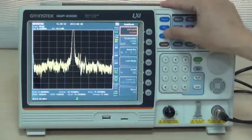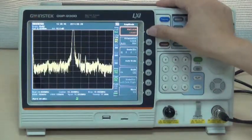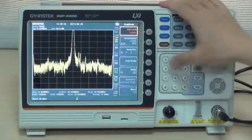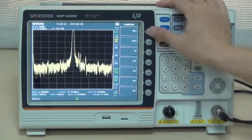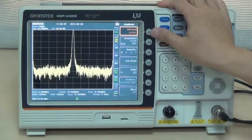Next, press Amplitude and F1 Reference Level, input 10 dBm to set Reference Level as 10 dBm.